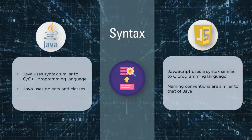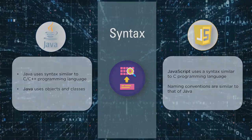Now, Java uses syntax that is similar to C or C++, while JavaScript uses a syntax similar to the C programming language. Since both Java and JavaScript use objects and classes, the syntax remains similar.